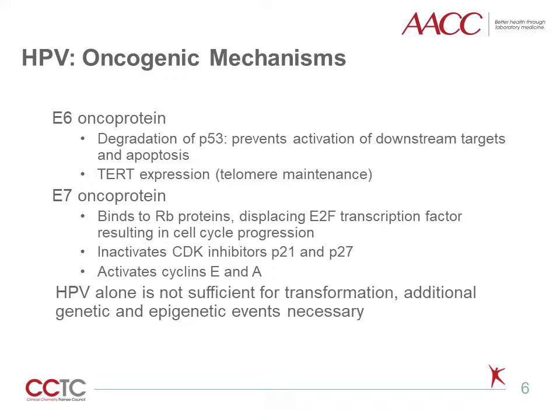E7 oncoprotein, on the other hand, binds to proteins of the retinoblastoma family, displacing E2F transcription factor, resulting in cell cycle progression. It also causes the cell to progress through cell cycle by inactivating cyclin-dependent kinase inhibitors P21 and P27, and activating cyclins E and A.